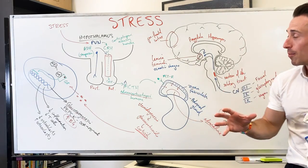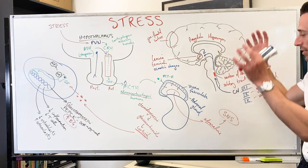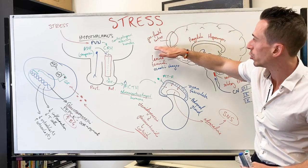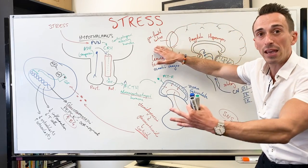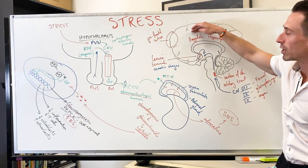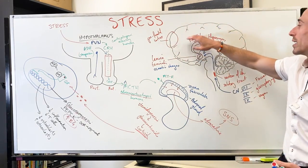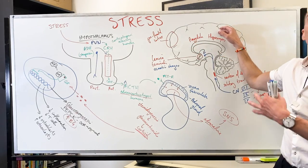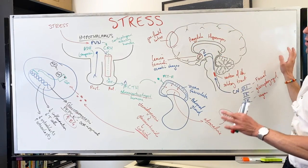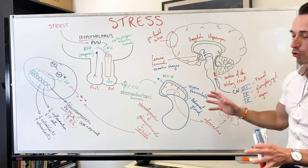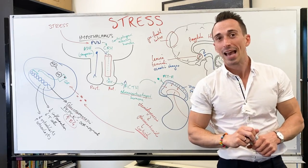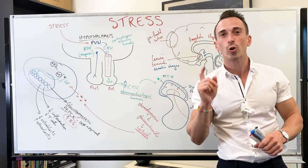That's a summary of how cortisol can affect the way you perceive situations and deal with them in the future, the way you have an emotional connection, and the way you remember situations. This is a quick run-through of stress, the hypothalamic pituitary adrenal axis, and importantly, cortisol.